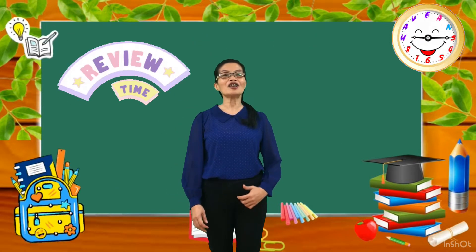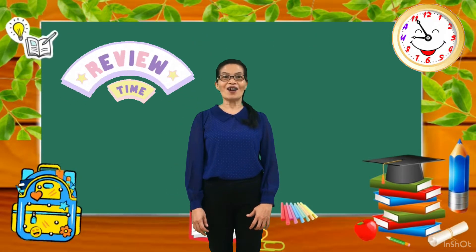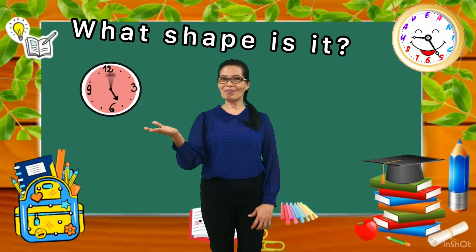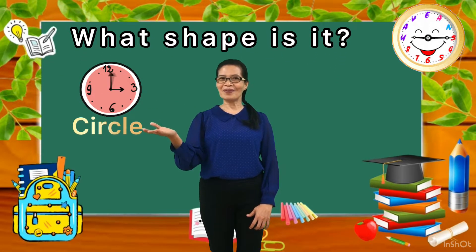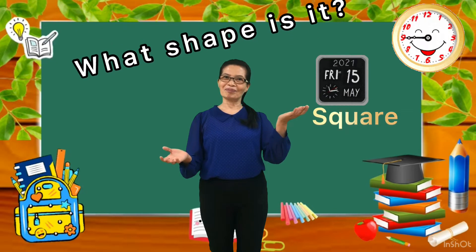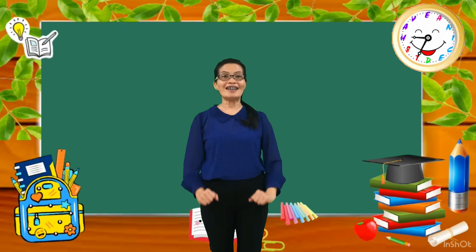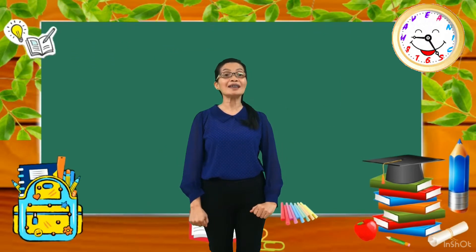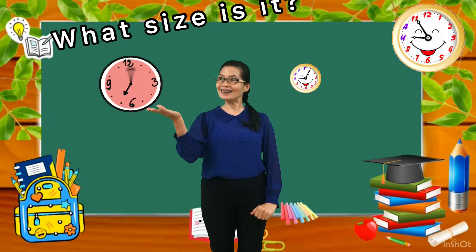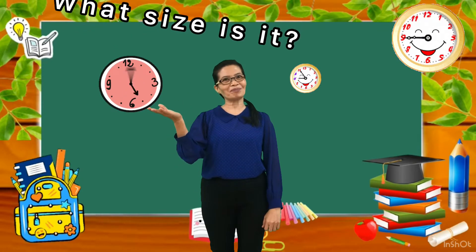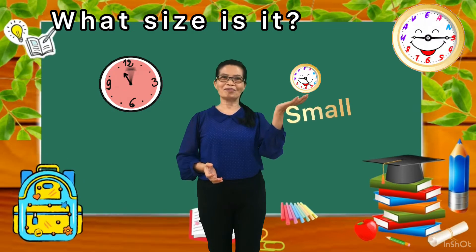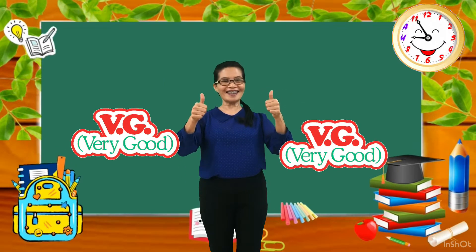Okay kids, let's review about the clock. What shape is it? Circle. How about this one? Square. Next, about the sizes of a clock. What size is this? Big. How about this one? Small. Very good.